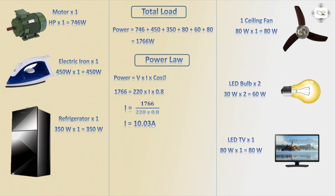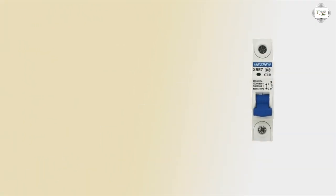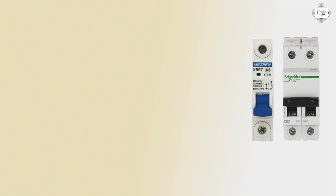This means we use a 10 ampere circuit breaker. For single-phase, use SP (single pole) for negative and positive. For two-wire use DP (double pole). For three-phase, use TP (triple pole) with three-phase line and neutral.